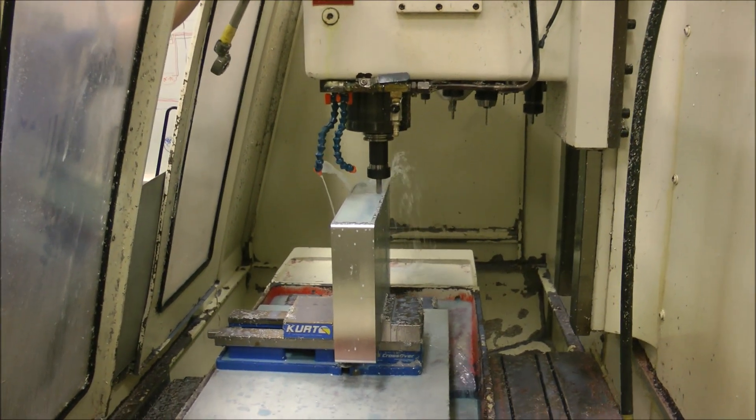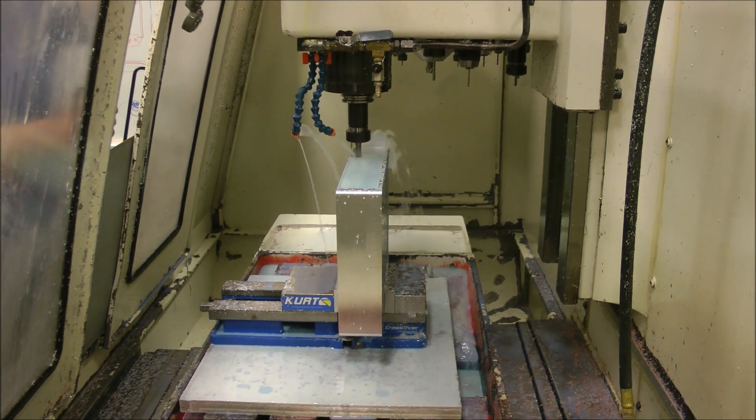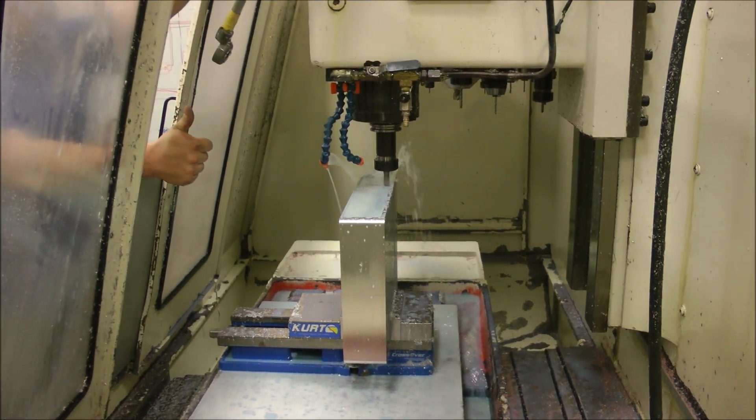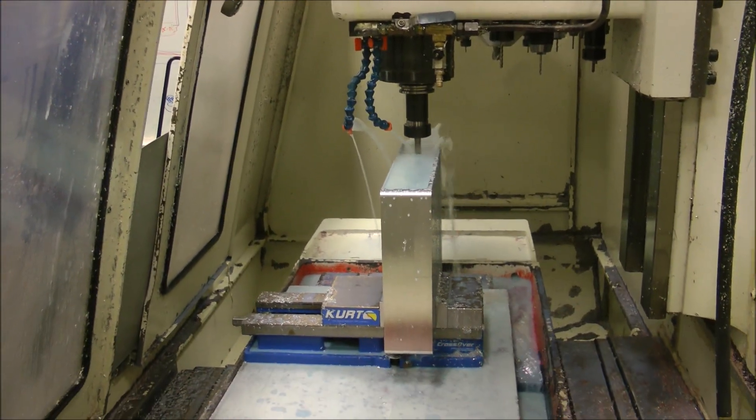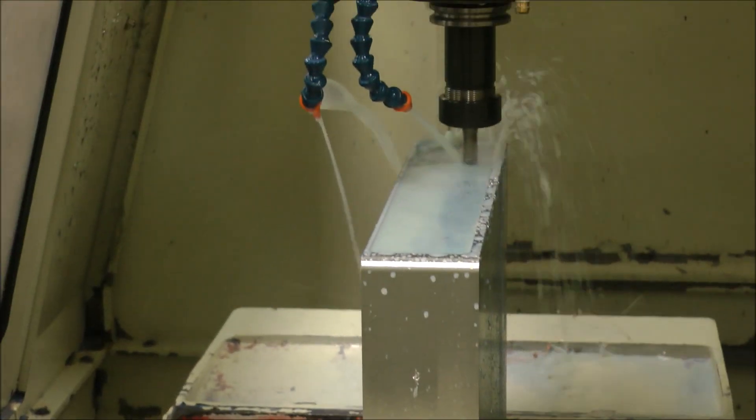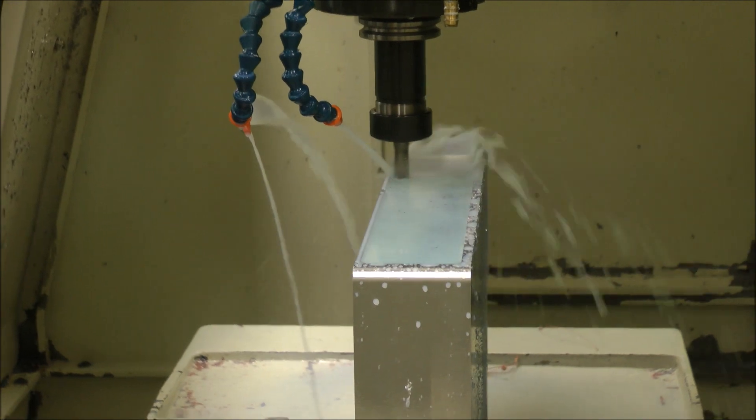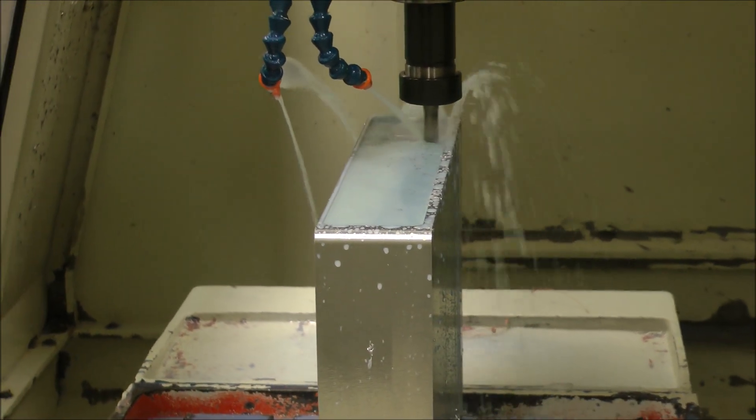As you can see here, and I apologize for the noise, this is the bottom of the power distribution box. They're doing the edges first, then they'll turn it over and hollow it out, and then there'll be a top made.